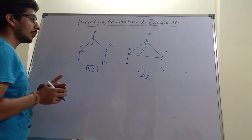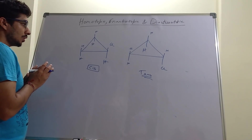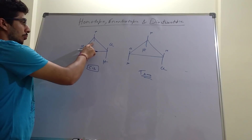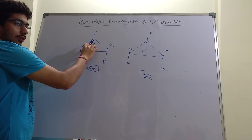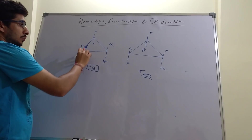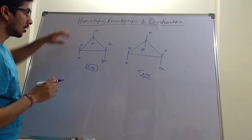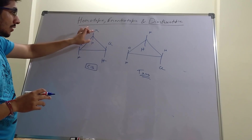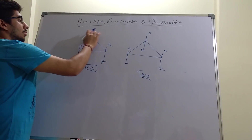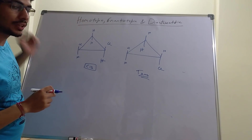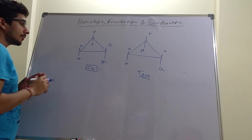For the cis isomer: a layman might say these two equivalent protons give one signal and this proton gives one signal — two signals total. But we must check whether the protons are diastereotopic. Replace one of the ring hydrogens by X — this X is in trans with both chlorines. Then replace the other hydrogen by X — now this X is cis with both chlorines and trans with the hydrogens. They are in different environments, giving a diastereomer. So these two hydrogens are diastereotopic and give two different NMR signals.